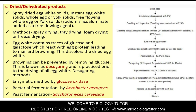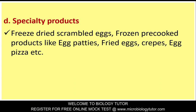Desugaring: Browning can be prevented by removing glucose from egg products. This is known as desugaring and is practiced prior to the drying of all egg white. Desugaring methods include enzymatic method by glucose oxidase, bacterial fermentation by Aerobacter aerogenes, and yeast fermentation by Saccharomyces cerevisiae. Specialty products include freeze-dried scrambled eggs and frozen pre-cooked products like egg patties, fried eggs, crepes, egg pizza, etc.